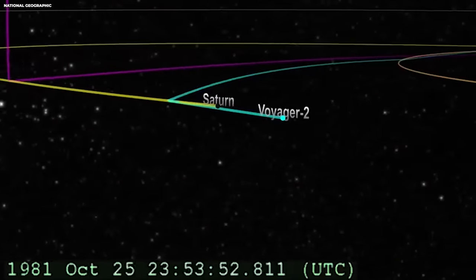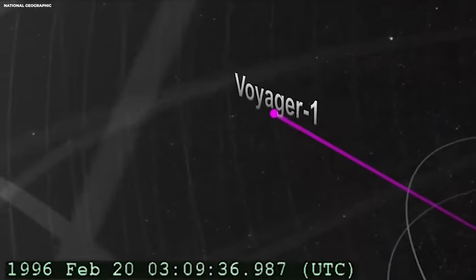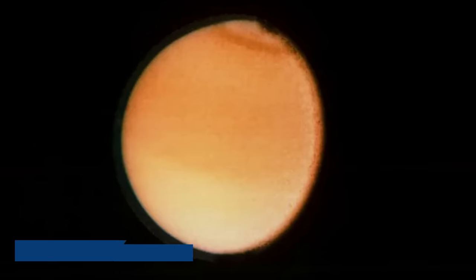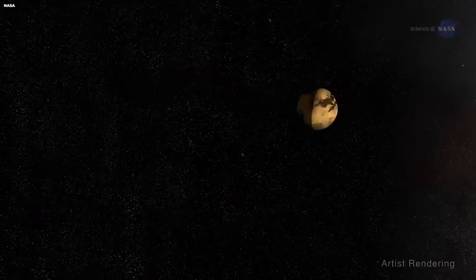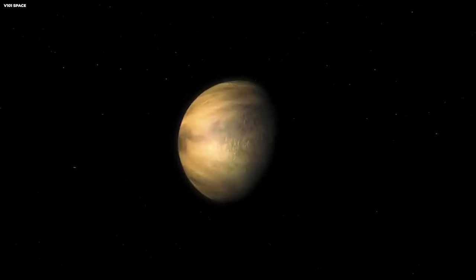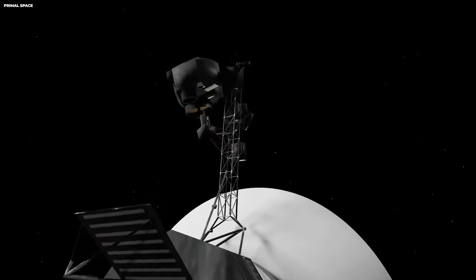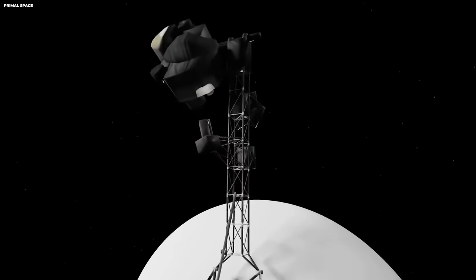Voyager 1 and Voyager 2 soon went their separate ways, each heading towards new frontiers. Voyager 1's path took it close to Saturn's moon Titan, which is cloaked in an orange, hazy atmosphere. This moon's mysteries piqued scientists' interest, leading to further studies of its complex chemistry. Voyager 1 then turned northward, departing from the plane of the planets, and began its journey beyond the realm of our solar system.